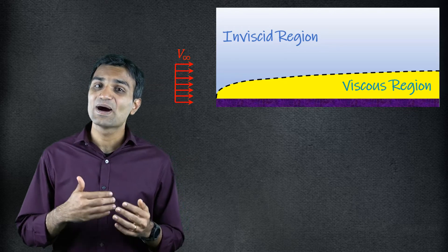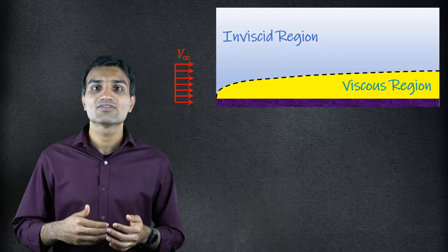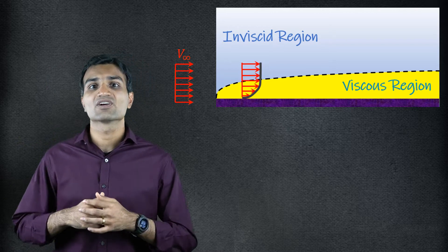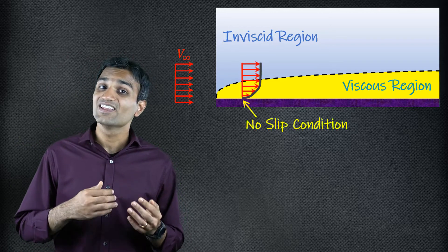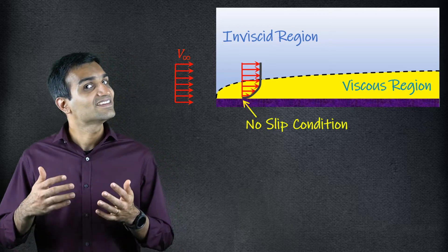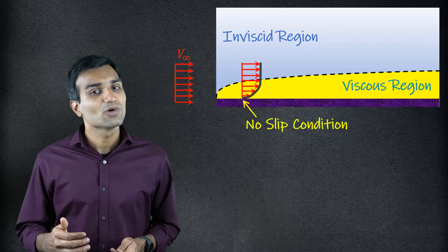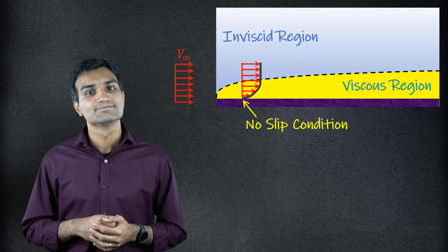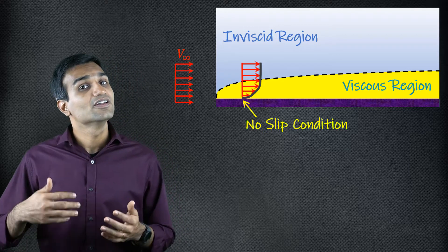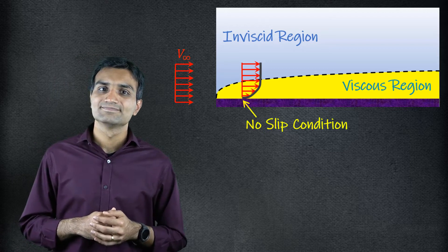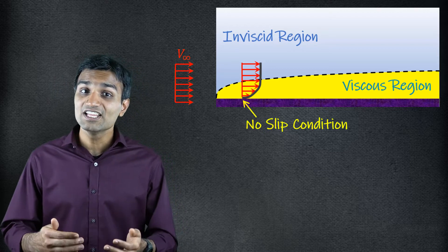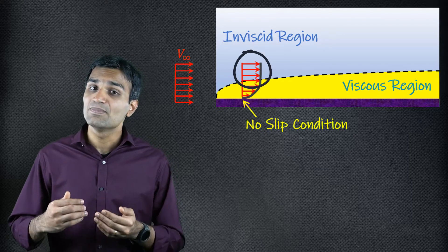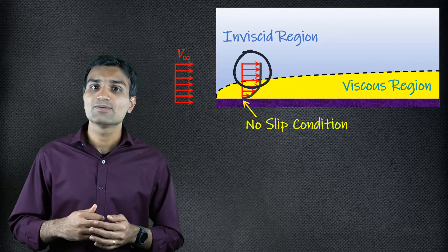In these boundary layers, the velocity of the fluid at the surface of the object is equal to the object velocity. For instance, if the object is stationary, the fluid velocity on the surface is equal to zero. This is called no-slip boundary of the fluid. The fluid velocity continues to grow away from the boundary until it merely becomes equal to the free stream velocity.